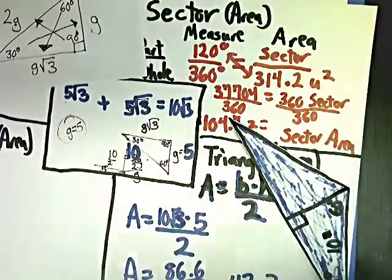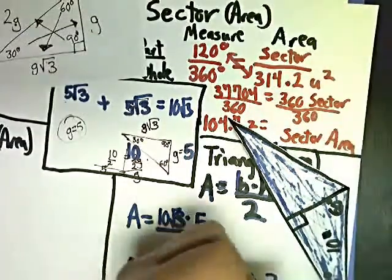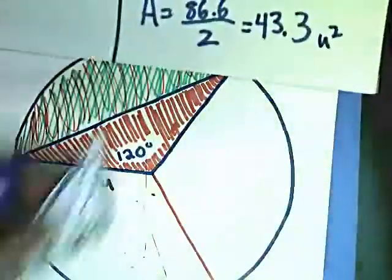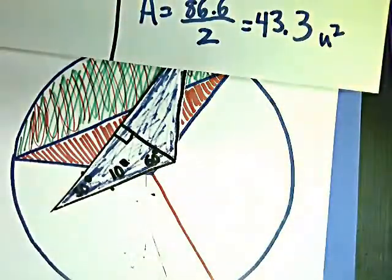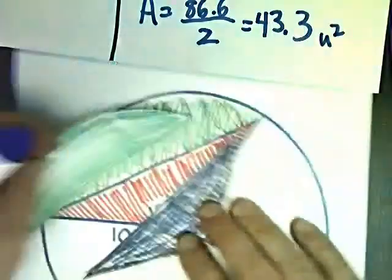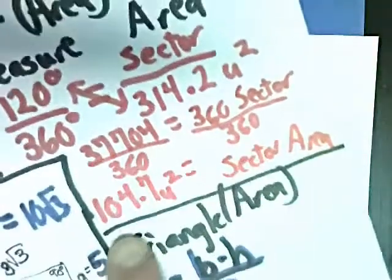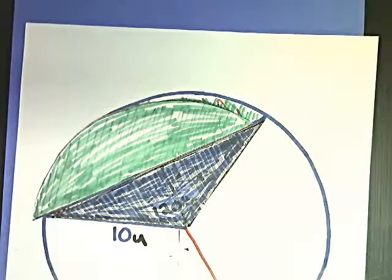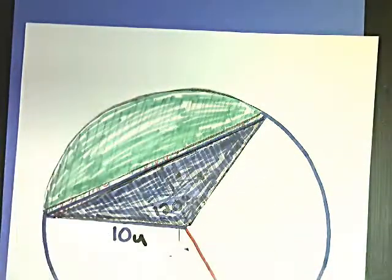Now, let's see if this makes any sense. Oh, and by the way, this is unit squared. Let's see if this makes any sense based on our picture. We've got this and this. The whole thing equals 104.7 right there. That part is 43. So, it's a little less than half. And this looks like a little less than half, so that makes a lot of sense.